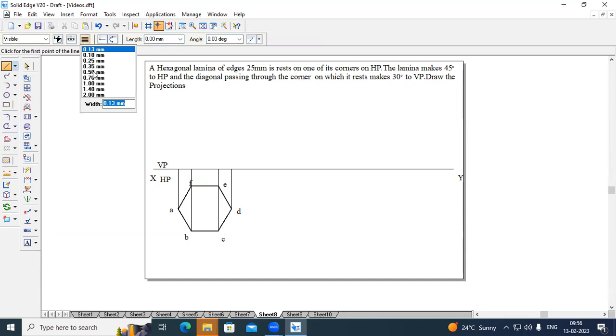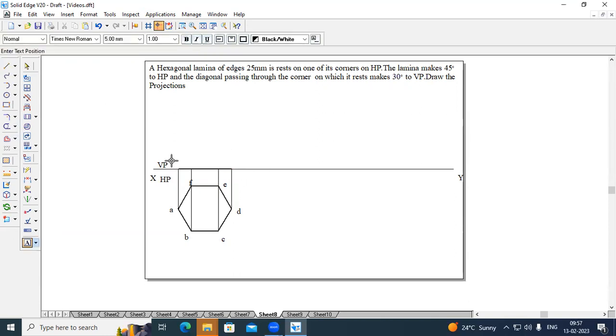We shall draw a front view of this particular hexagon. From this we shall name this. This is A dash. This point will be B dash of F dash. And this point will be C dash of E dash. And finally, this will be D dash. This is stage one. This is the front view of this particular hexagonal lamina.